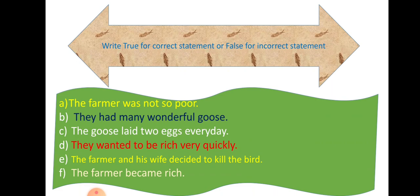Now look, suppose this is a question. Write true for a correct statement or false for an incorrect statement. For example: 'The farmer and his wife decided to kill the bird' — we have already read this in the story, so this is true. 'The farmer became rich' — this is not supported by the story, so this would be false.